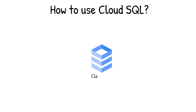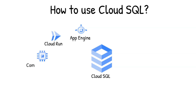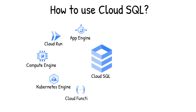You can use Cloud SQL as a relational database for your applications that are hosted within Google Cloud, like App Engine, Cloud Run, Compute Engine, Kubernetes Engine, or Cloud Functions. You could also connect your Cloud SQL database with applications that are hosted outside of Google Cloud.